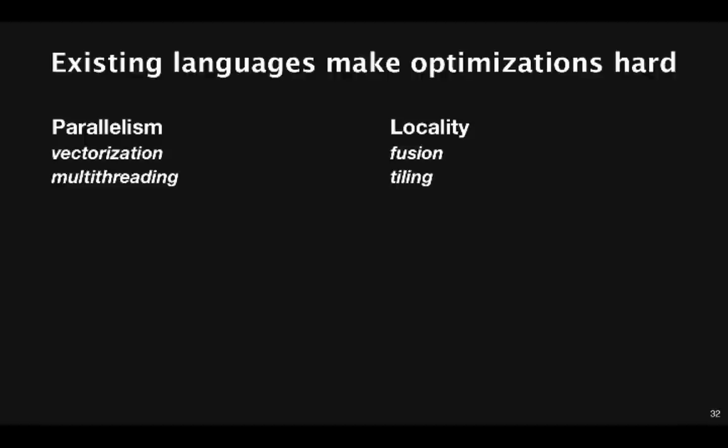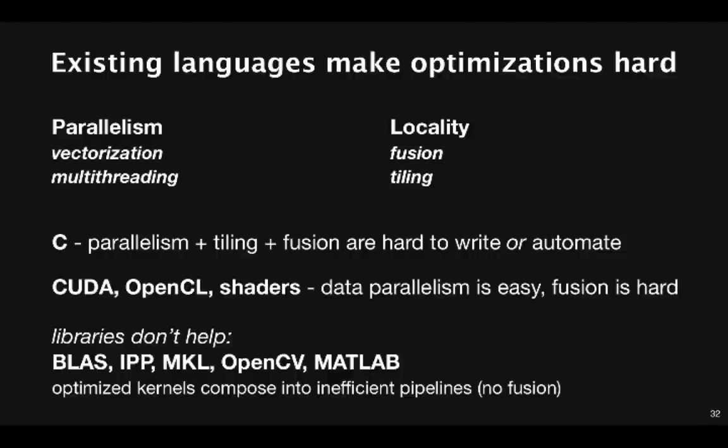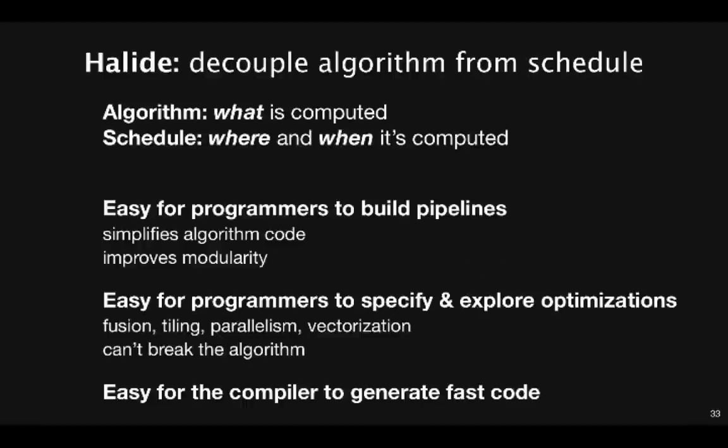The thing that makes it really difficult in practice is that existing languages make it hard to express or explore these optimizations for parallelism and locality. Traditional languages like C make both parallelism and locality hard to express, and also hard for the compiler to infer, because when you write C you tend to over specify these things. Newer languages like CUDA and OpenCL make the data parallelism easier, but they still have fusion for locality as a manual process that requires rewriting all of your code for any given fusion strategy. Libraries of optimized routines like Intel performance primitives and OpenCV aren't enough either, because individually optimized kernels still compose into inefficient pipelines. They can't interleave stages for locality across those function boundaries.